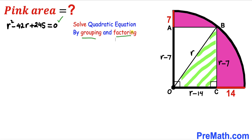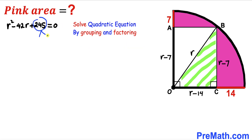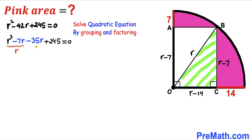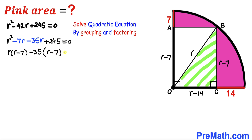We now have this quadratic equation and we are going to solve it by grouping and factoring — you may use the quadratic formula as well. Let's focus on the constant 245: this could be broken down to 7 × 35, and 7 + 35 = 42, which matches the middle coefficient. So the middle term −42r can be written as −7r − 35r. I have now replaced −42r with this split form, and we can see that r is common in the first two terms and −35 is common in the last two terms.